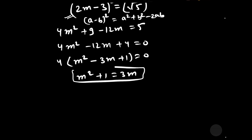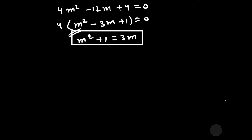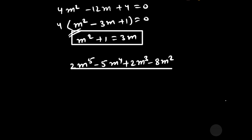We will use the relation m² + 1 = 3m in solving the given expression. The expression we need to evaluate is 2m⁵ minus 5m⁴ plus 2m³ minus 8m², all divided by m² + 1.